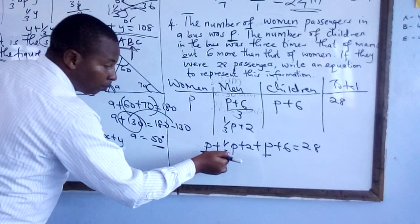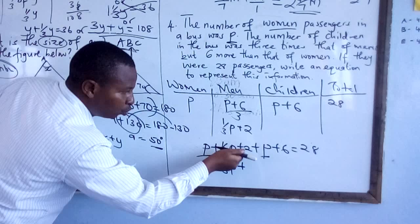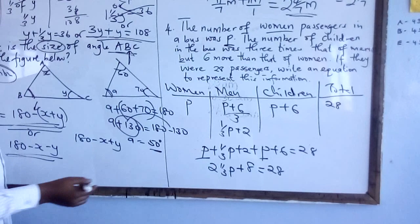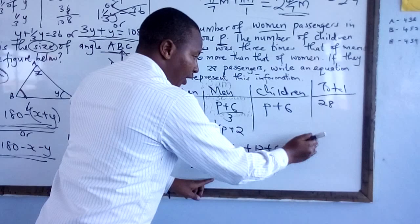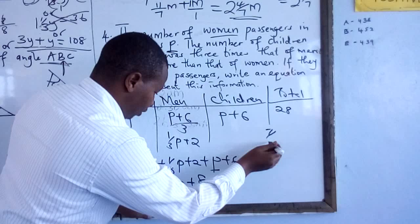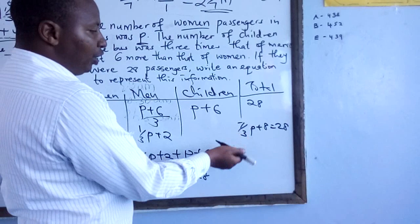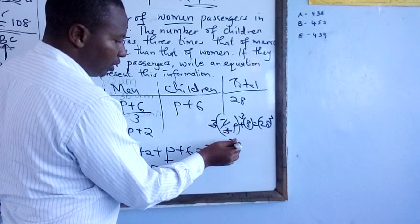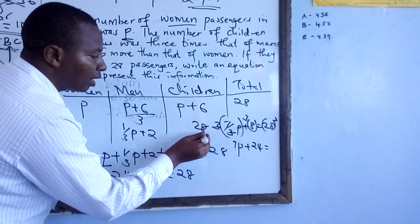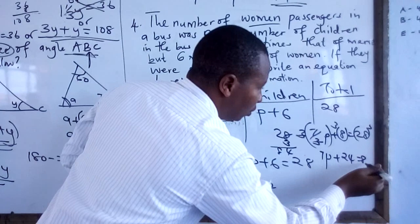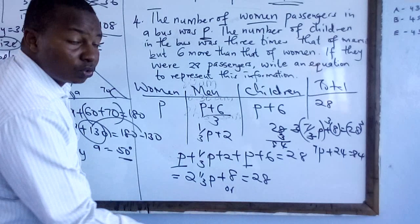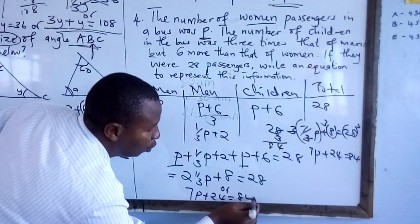The total is 28, so the equation is: P plus (P plus 6) plus one-third(P plus 6) equals 28. Simplifying: 2P plus 8 plus one-third P plus 2 equals 28. You can also remove the denominator by multiplying all terms by 3, giving 7P plus 24 equals 84. Any of these equivalent forms is a correct answer.